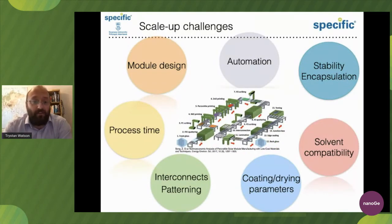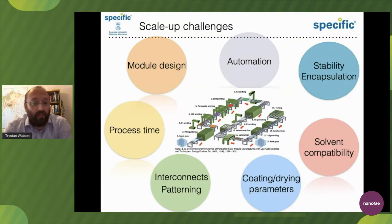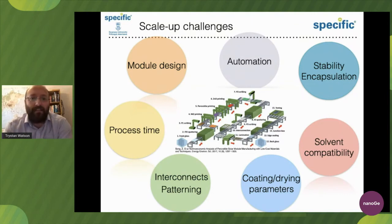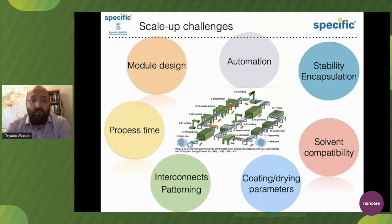Here's another non-exhaustive list of challenges - one could build an entire career on anything within these circles, and people have. Module design and process time: how quickly can we deposit something? We can use near-infrared or photonic processing to do it rapidly. Interconnects and patterning I'll discuss in the next slide. Automation is interesting - we saw quite a lot of movement between spin coater and hot plate; how do we automate it? And stability and encapsulation - we'll hear from Henry in the next talk about stability, and there are ISO standards being presented for structured assessment.